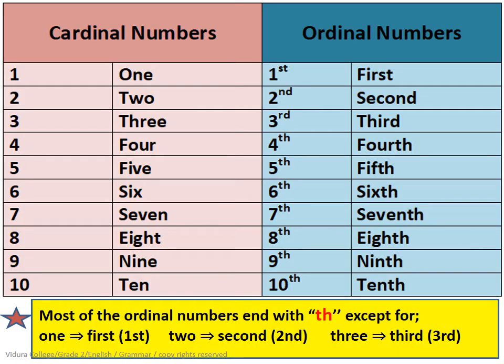Now look at this table of cardinal and ordinal numbers and try to find the differences. Cardinal number one is written as ordinal number first. Two becomes second, three becomes third, four becomes fourth, five becomes fifth, six becomes sixth, seven becomes seventh, eight becomes eighth, and nine becomes ninth.